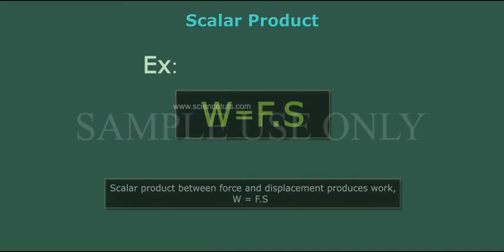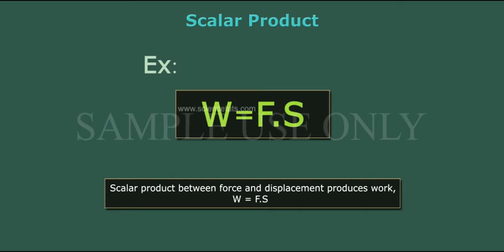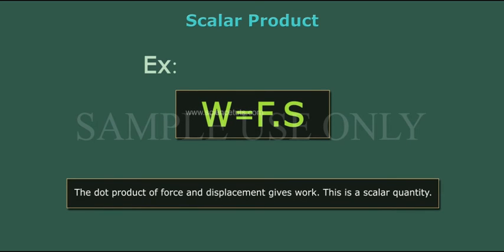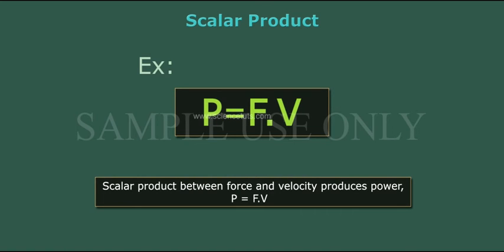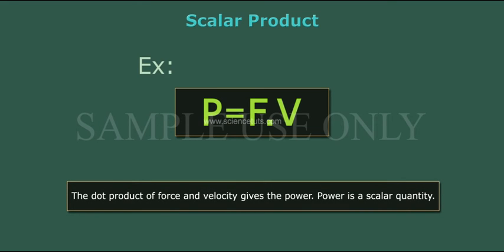Example: the scalar product between force and displacement produces work. W is equal to F dot S — the dot product of force and displacement gives work. Similarly, P is equal to F dot V — the dot product of force and velocity gives power. Power is a scalar quantity.